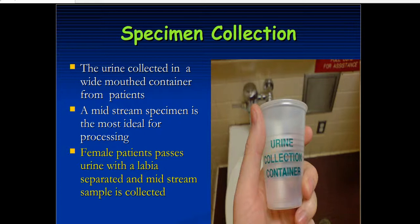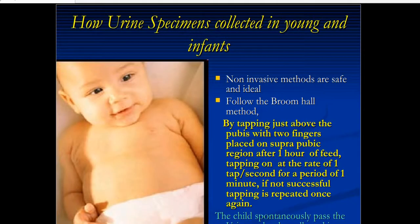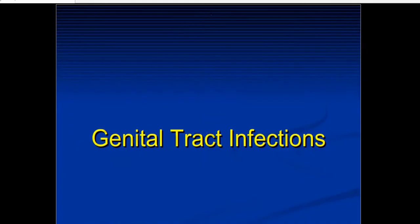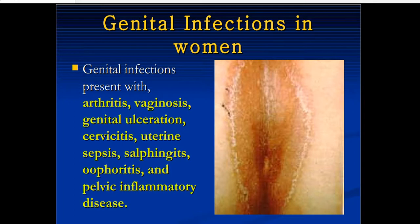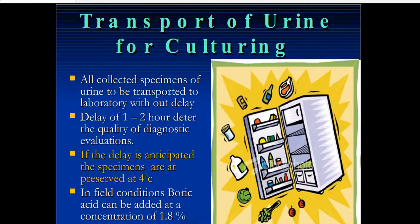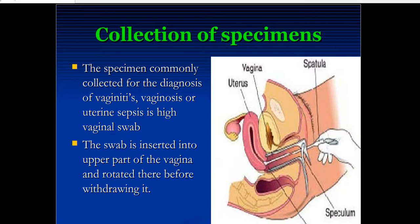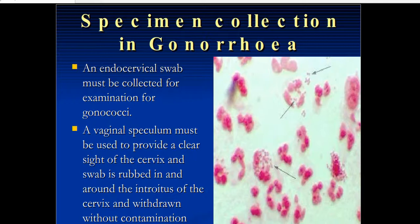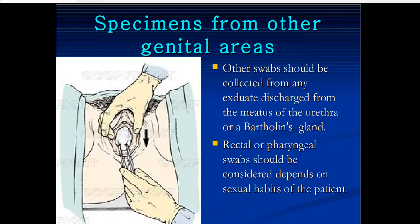Female patients should provide urine with labia separated and a midstream sample is collected. For genital infections such as vaginosis, genital ulceration, cervicitis, and uterine sepsis, samples also need to be collected. A vaginal swab is used to understand the genital infection. In case of gonorrhea, an endocervical swab must be collected for examination of gonococci. A vaginal speculum must be used to provide a clear sight of the cervix. The swab is rubbed in and around the introitus of the cervix and withdrawn without contamination from the vaginal wall.